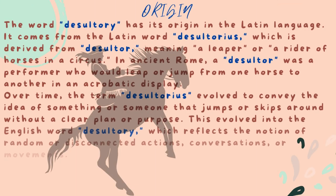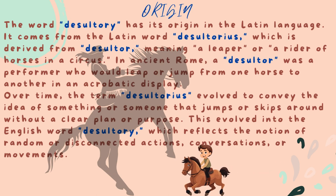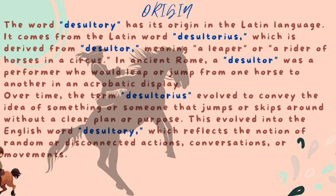Origin. The word desultory has its origin in the Latin language. It comes from the Latin word desultorius, which is derived from desultor, meaning a leaper, or a rider of horses in a circus. In ancient Rome, a desultor was a performer who would leap or jump from one horse to another in an acrobatic display. Over time, the term desultorius evolved to convey the idea of something or someone that jumps or skips around without a clear plan or purpose. This evolved into the English word desultory, which reflects the notion of random or disconnected actions, conversations, or movements.